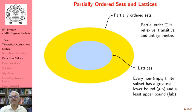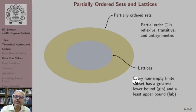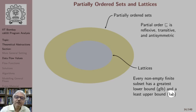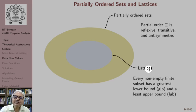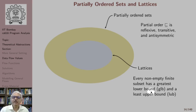Lattices are a special kind of partially ordered set with the following property: every non-empty finite subset of this partially ordered set has a greatest lower bound, denoted GLB, and a least upper bound, denoted LUB. Such a partially ordered set is called a lattice. This is the definition of the lattice — the requirement that must be satisfied by a partially ordered set for it to be called a lattice. When this requirement is not satisfied, we just have a partially ordered set which is not a lattice.